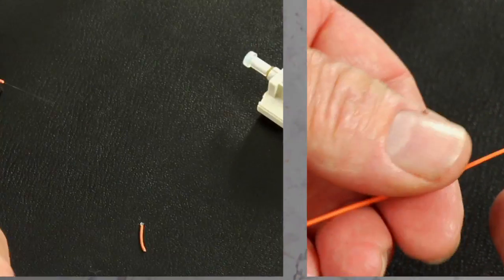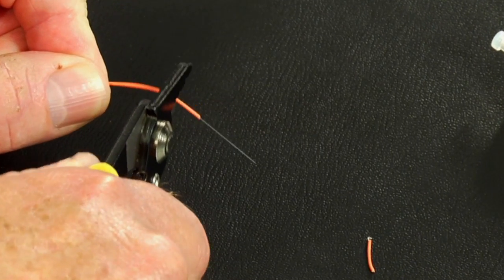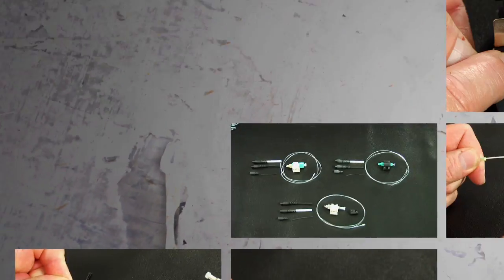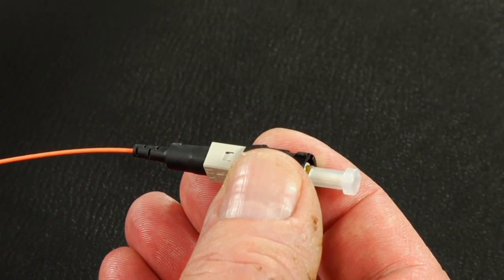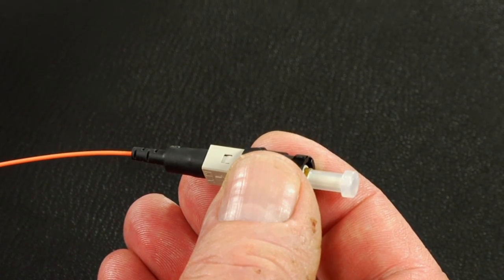Fast connectors provide an immediate termination to both single mode or multi-mode fibers and are color-coded for ease of fiber identification. This video will guide the user through the steps required to properly terminate the fast ST connectors.